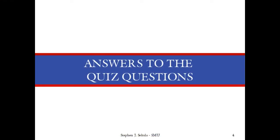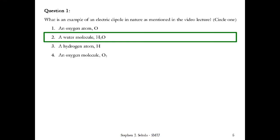So for the quiz questions, let's look at the answers. What is an example of an electric dipole in nature as mentioned in the video lecture? Is it an oxygen atom, a water molecule, a hydrogen atom, or an oxygen molecule? The answer is water molecule — none of the other things by themselves is a dipole. We're going to come back to water molecules in a bit.